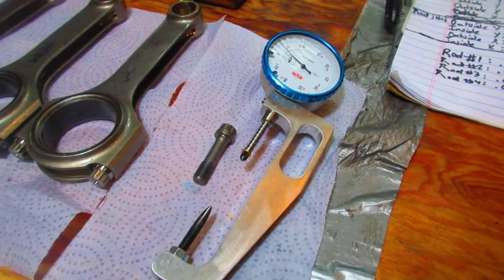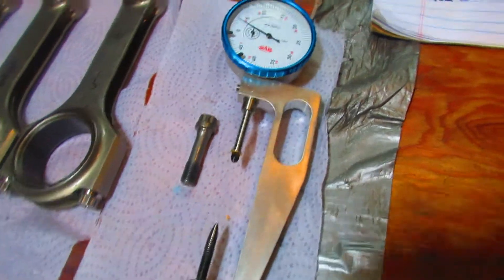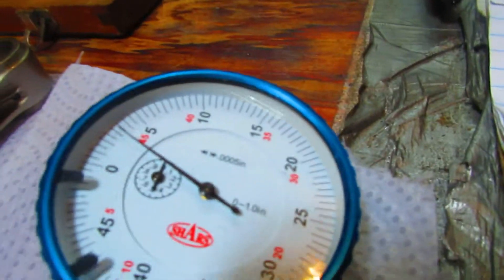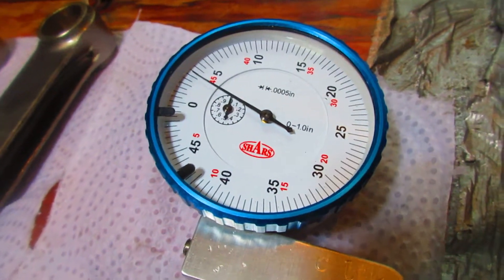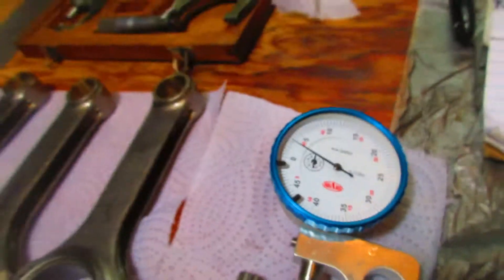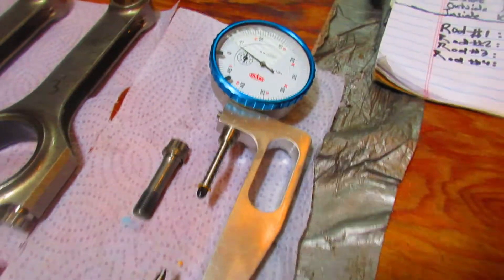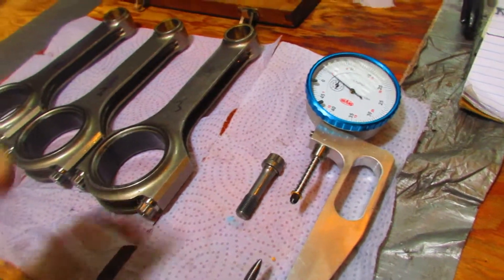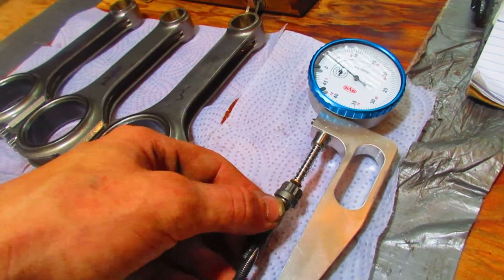First of all, you're going to need a rod bolt stretch gauge. I got this from DCR. It comes with a relatively inaccurate gauge and it's only accurate to a half a thousandth. You can get some that are accurate to a one ten thousandth of an inch, but it's better than nothing. Essentially, what you're going to do is measure the free, non-torqued length of the bolt.